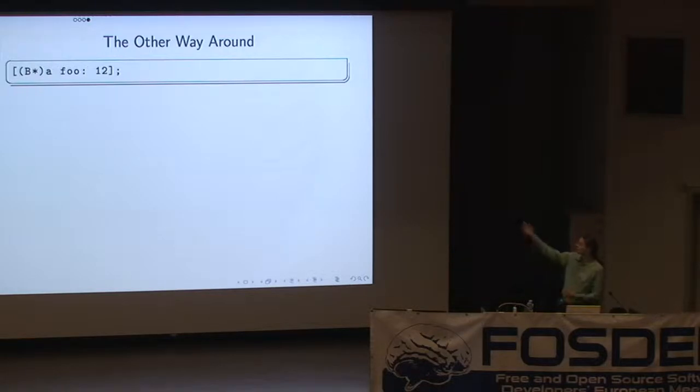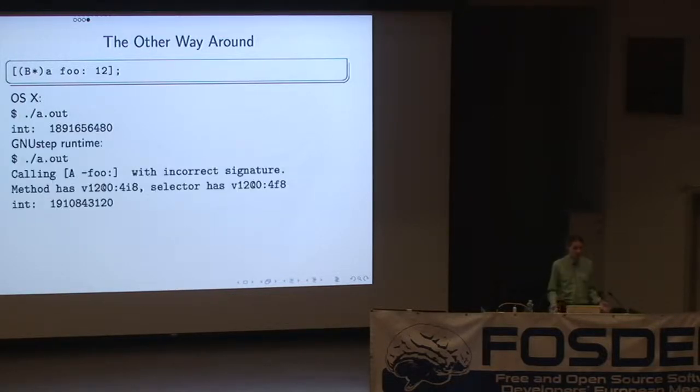And what happens if you then have the same idea but the opposite way around? If you do a downcast and you call this method, which it thinks should be accepting, the caller thinks it's passing a float, and the callee is expecting an integer. Well, again, on OS 10, calls the function, and there's some nonsense in the register. With the GNU step runtime now, it does this. It says you're calling this method, but you're doing it wrong. Fix your code. So having this reporting an error is just a little bit nicer.